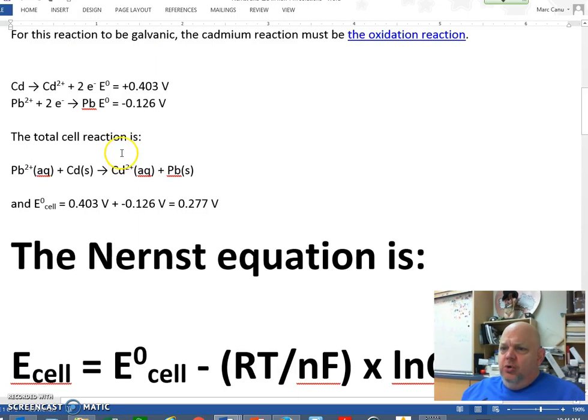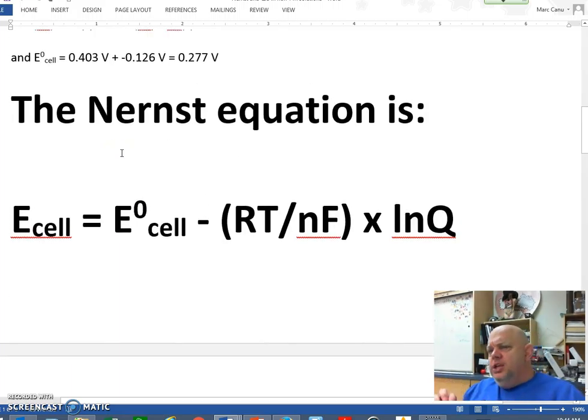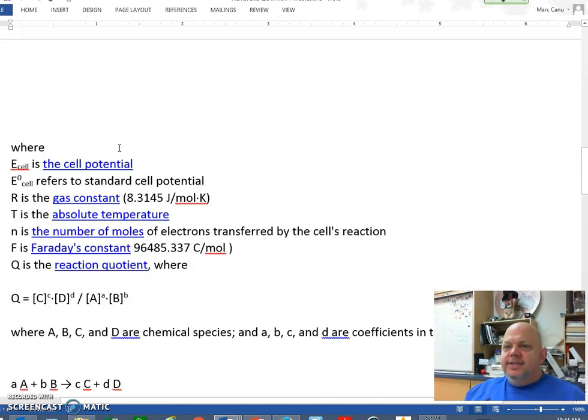So now we can look at the total cell reaction. Notice we're not dealing with any anions, we're looking at what's happening with the cations right now. So you find here's lead plus 2 plus cadmium gets us cadmium plus 2 and lead solid. So the E cell, the whole thing is 0.277 volts. Now that's the standard setting at one molar of each solution. That's where the Nernst equation comes in.